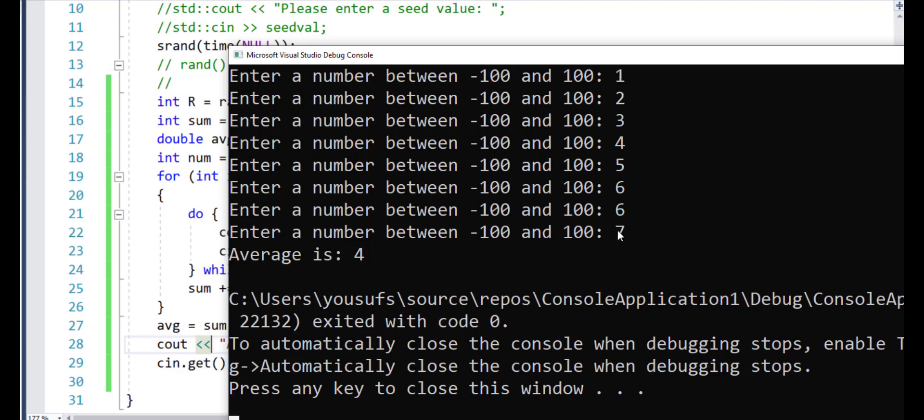34 divided by 8, since I'm using integers here, it comes out to 4, instead of 4 point something.